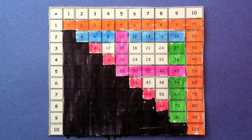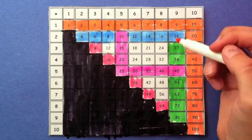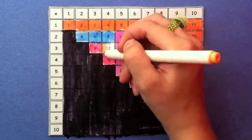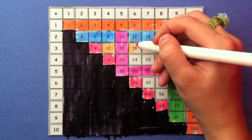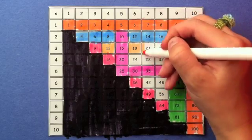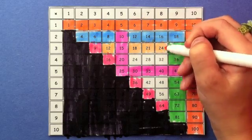3s aren't too hard. You may already know how to count by 3s, thanks to Schoolhouse Rock. And besides, there are only 4 of them left. 3 times 4 is 12. 3 times 6, as I mentioned before, is 18. 3 times 7 is 21. And 3 times 8 is 24.